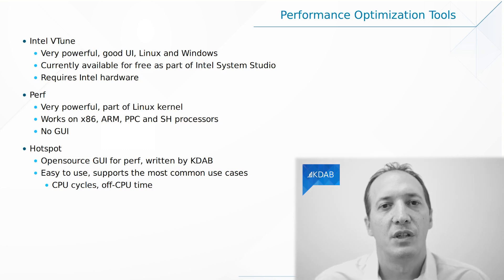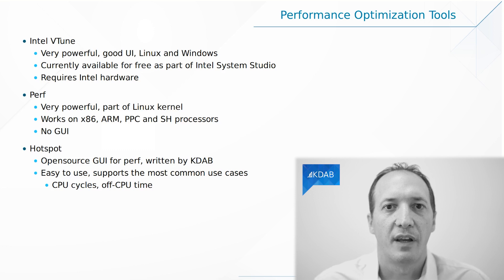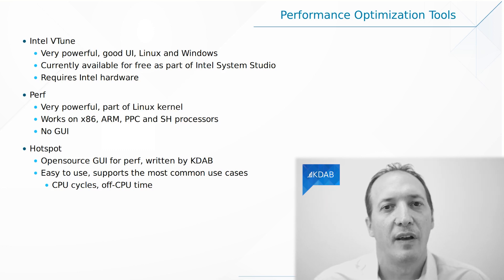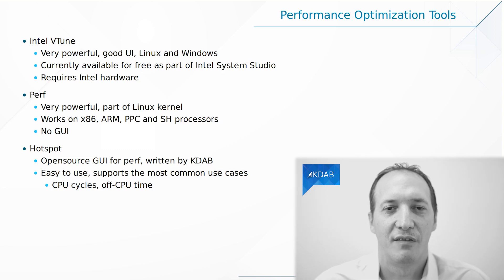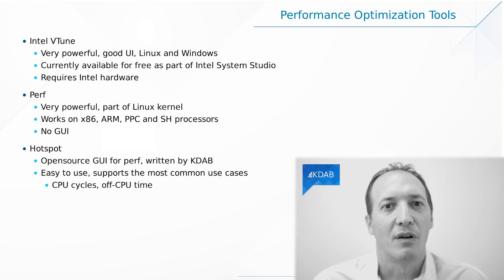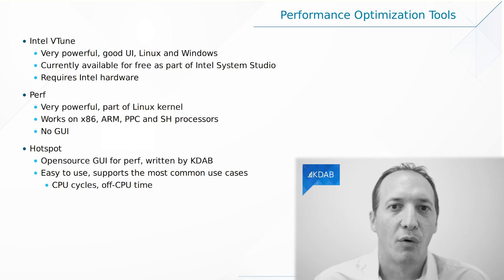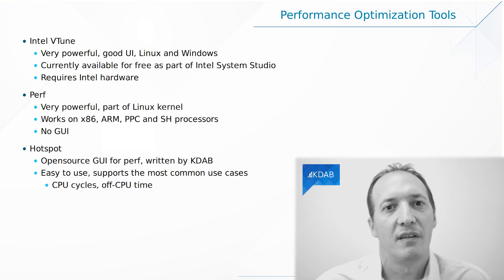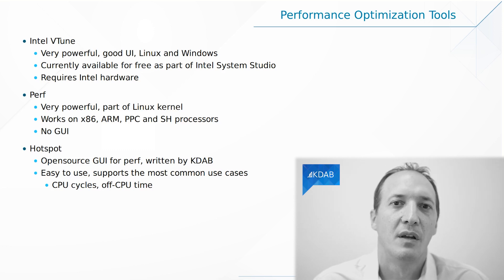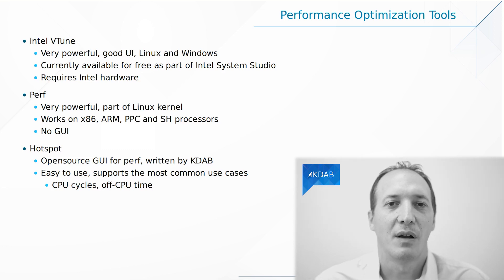Another possibility is to use Perf, which is part of the Linux kernel. That means it supports all of the architectures of the Linux kernel, including x86, ARM, PowerPC, and so on. However, Perf has no user interface — it's a command line tool which is pretty difficult to use. What we did at KDAB is write a tool called Hotspot, which is a graphical interface for the measurements made by Perf. You can find Hotspot on GitHub — it's an open source application that you can use for free. Its goal is to be easy to use and it covers most of the common use cases, including watching the CPU time used by the application and finding out which bit of code is using it. It also supports measuring off-CPU time, meaning the time where the application is sleeping or waiting for something to happen. You can click on the link in the description for a full demo of Hotspot.